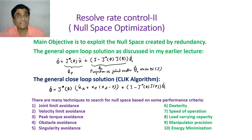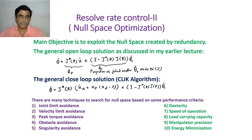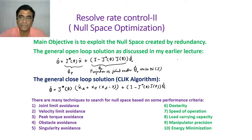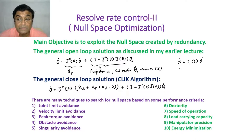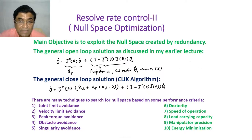The main objective is to exploit the Null Space, because we have redundancy. Even if there is no redundancy, Null Space may exist in industrial robots also, but for redundant robots the Null Space is the characteristic feature. When we have Null Space, the general open-loop solution of the differential equation — X-dot equals J(theta) times theta-dot — will have two solutions: a particular solution and a homogeneous solution. The homogeneous solution corresponds to the right-hand side equal to zero, which we call the Null Space solution.